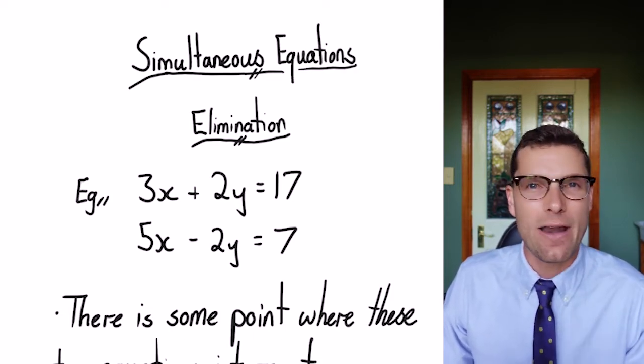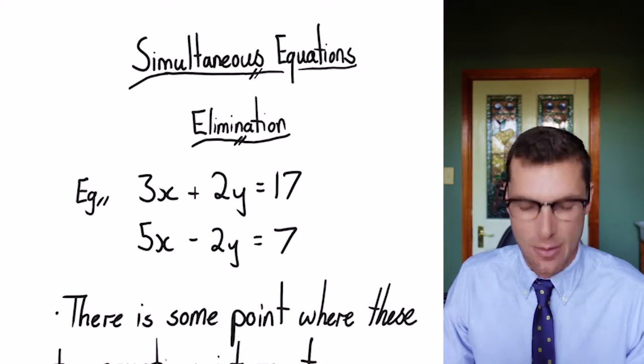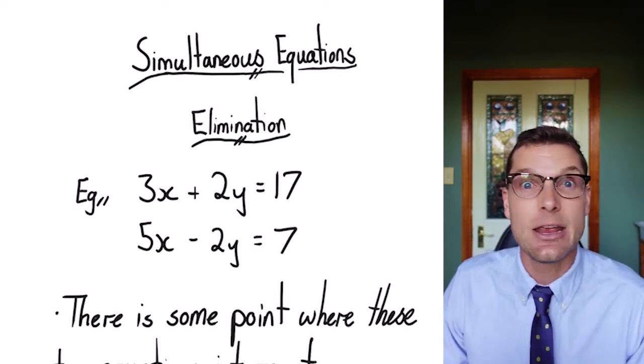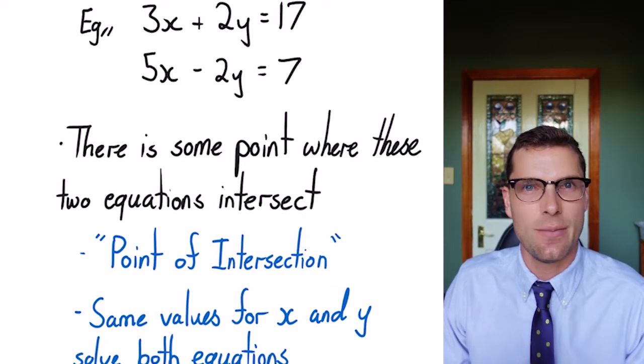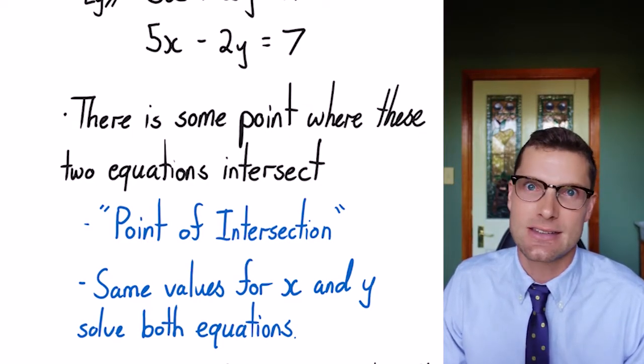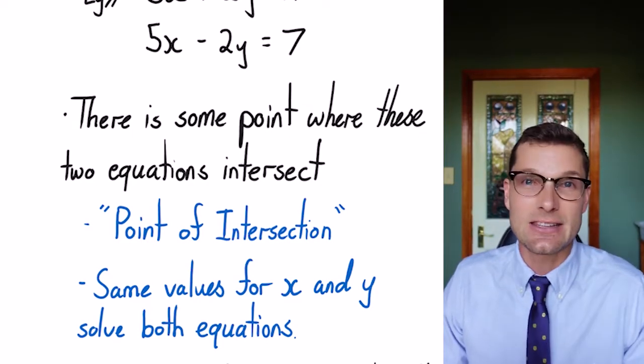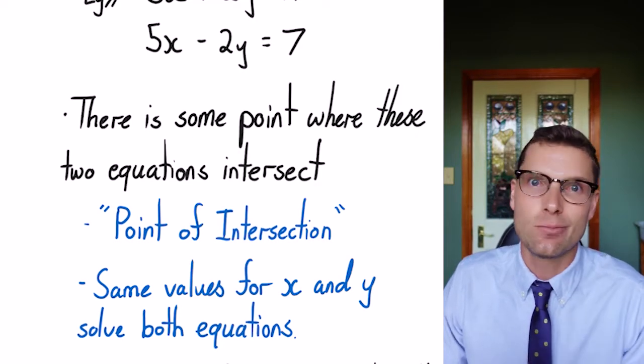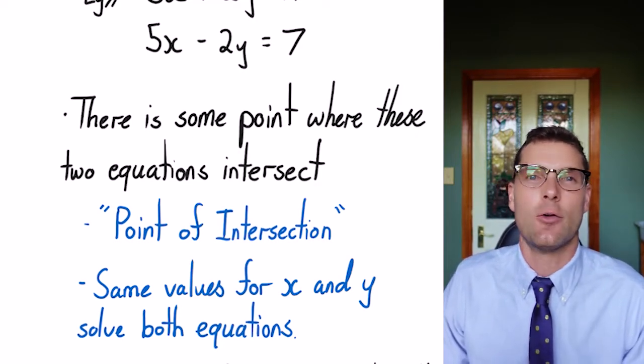And we need to work out one variable at a time and sub back in. So we've got two linear relationships at the same time, and at some point they intersect. This is called the point of intersection. This is when x and y solve both equations, and that's the point we are looking for.